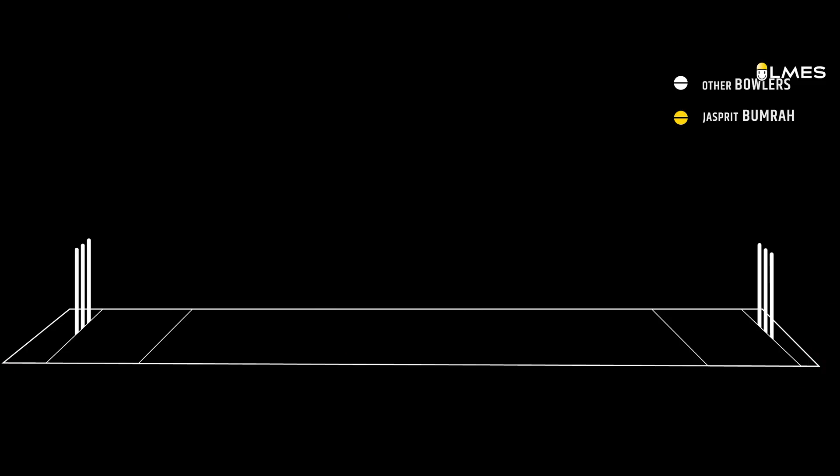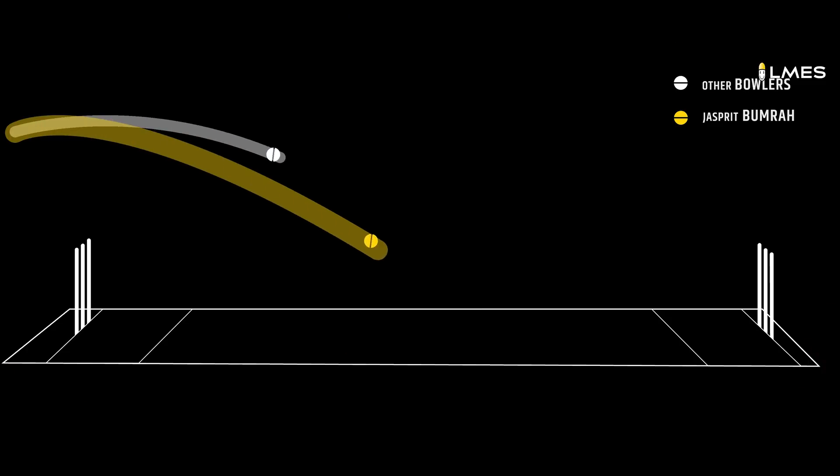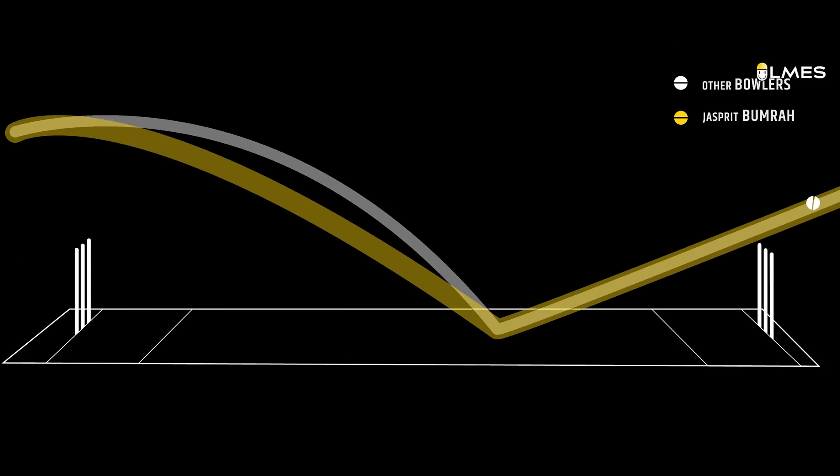If you have a fast bowler, you can deliver a fast ball, and you can go to the in-swing and out-swing. If you look at bowlers, there are certain abilities, and if we look at Bumrah, there is a special ability. That is what makes him the ODI number 1 bowler. Bumrah's ball tipping time is less compared to other bowlers.